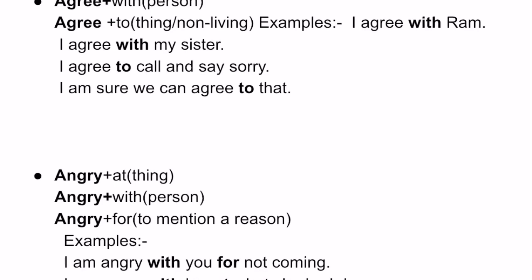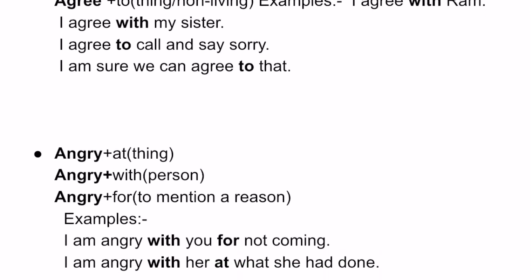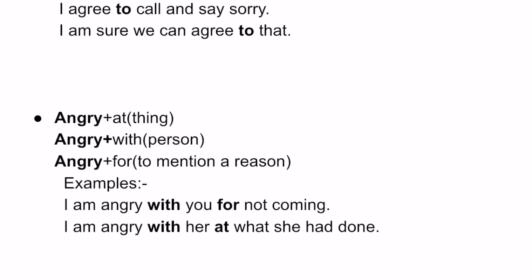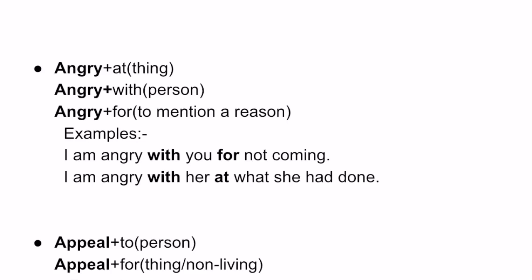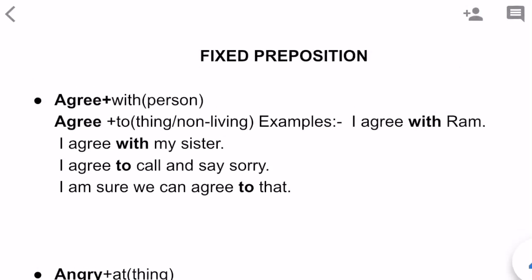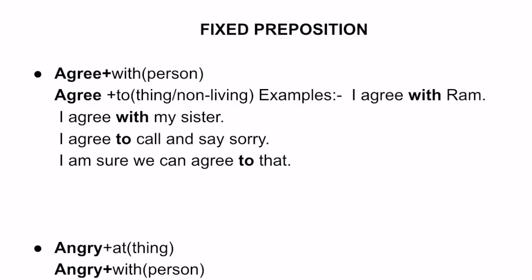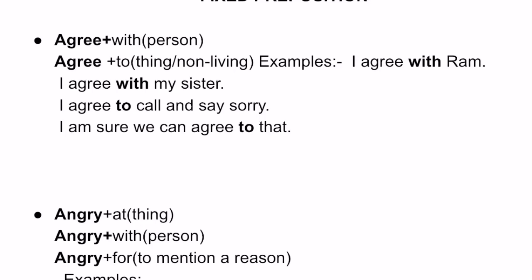Coming to the second word: 'angry.' We can see three different types of prepositions used with 'angry': 'at,' 'with,' and 'for.' We use 'angry at' when we are speaking about a thing. We use 'angry with' when we are speaking about a person. Remember, 'with' comes with both 'agree' and 'angry' when we are speaking about a person. The third one is 'angry for.'